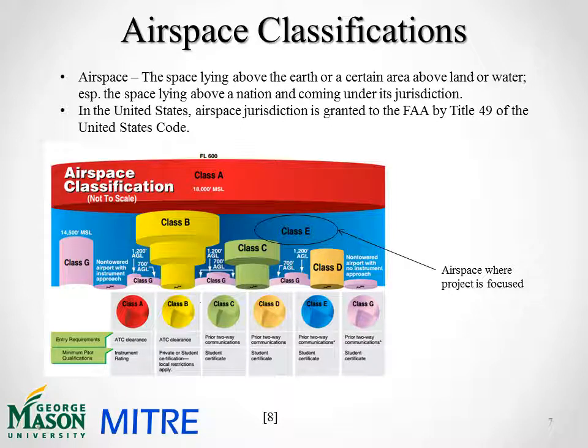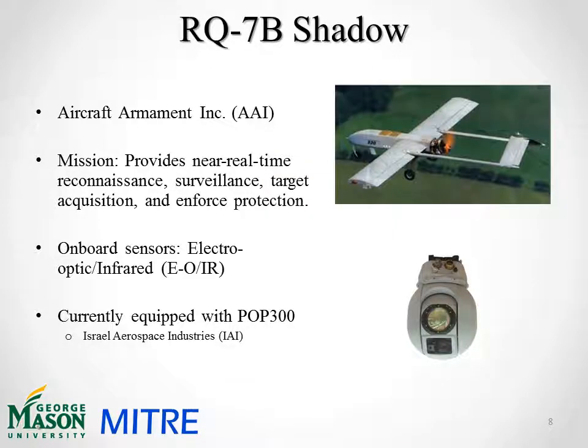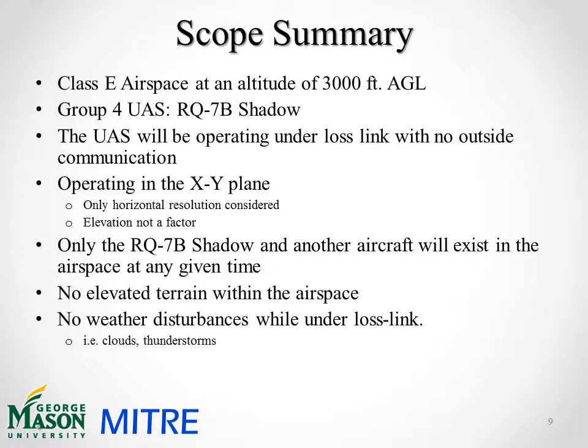Airspace is defined as the space lying above the earth or a certain area above land or water, especially the space lying above a nation under its jurisdiction, as granted to the FAA by Title 49 of the United States Code. For our project, we will be operating in Class C airspace — a restricted version of airspace under 18,000 feet where the RQ-7B Shadow operates — and not inside any airport Class B, C, or D. The RQ-7B, produced by Aircraft Armament Incorporated, or AAI, provides near real-time reconnaissance, surveillance, target acquisition, and force protection, with its mission between 3,000 and 5,000 feet, equipped with the POP-300 electro-optic infrared sensor produced by Israel Aerospace Industries.